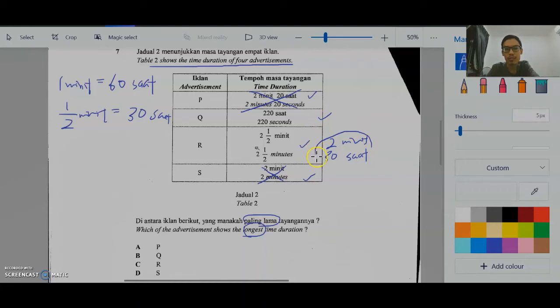Yang ini kalah. Kita nak cari yang paling lama. We look for the longest duration. This one, 220 seconds. I don't know. We convert this to seconds first. Tukar ni kepada saat. 2 minit darab 60 saat plus 30 saat. 2 times 60 is 120 plus 30 seconds. You get 150 seconds. So, ini 150 saat sahaja. Manakala Q ialah 220 saat. So, jawapan dia Q.